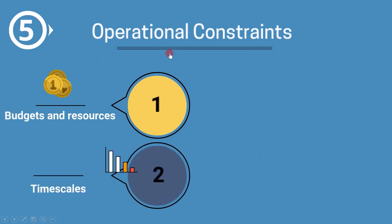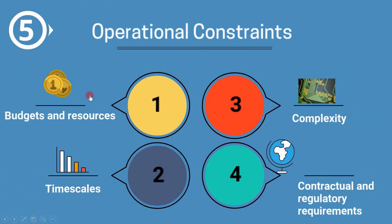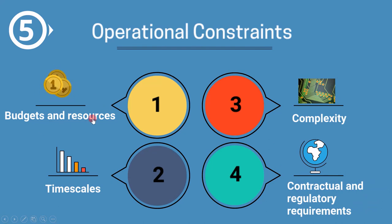The fifth context is based on operational constraints. For example, budget and resources mean whether the assigned budget is sufficient to complete the project. Timescale means whether you need to complete the project in less time or have sufficient time. Complexity refers to how complex the product is to implement. The last one is contractual and regulatory requirements — sometimes we also need to fulfill industry-related requirements, like ISO 26262 for automotive safety.